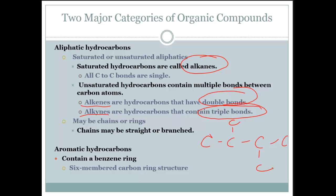Aromatic hydrocarbons contain a benzene ring. It's a six-member carbon ring structure. So you draw it as a hexagon, and then there's a double bond in between them.